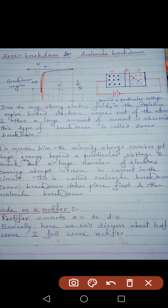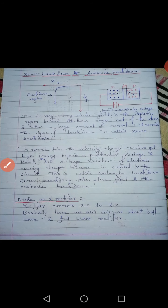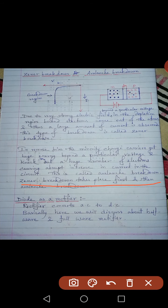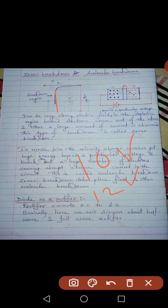Both Zener breakdown and avalanche breakdown produce a breakdown region in the reverse characteristic. However, Zener breakdown is small compared to avalanche breakdown — Zener breakdown takes place first, and then avalanche breakdown. For example, if Zener breakdown occurs at 10 V, we get a large current; then if the voltage is increased further to say 12 V, avalanche breakdown occurs and the current increases even more. So Zener breakdown takes place first, then avalanche breakdown.